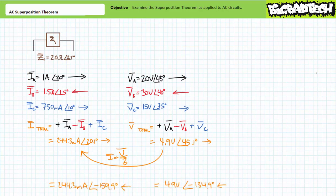It should be noted that these calculations initially assumed left to right is the positive direction. If, however, we operated under the assumption where right to left is positive, we'd obtain a current of 244.3 milliamps at an angle of negative 159.9 degrees going from right to left. Similarly, our total voltage drop would be 4.9 volts at an angle of negative 134.9 degrees positive to negative right to left. There is absolutely nothing wrong with this assumption. All you have to realize is that sources A and C are aiding each other, whereas source B is opposing A and C. Just pick a direction and stay consistent.